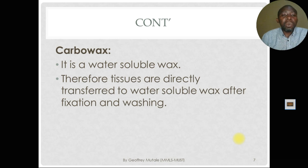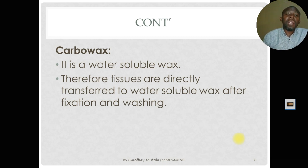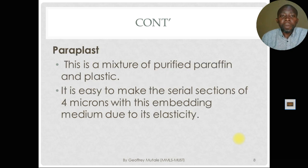Carb wax is water soluble, so tissues are directly transferred to this water-soluble wax after fixation. We do not need to go through dehydration and clearing steps because it is already miscible with water, so we go straight to impregnation and embedding. Another type of embedding medium is paraplast, which is a mixture of purified paraffin and plastic polymers.